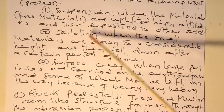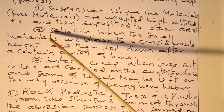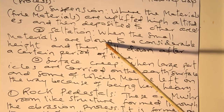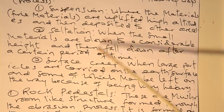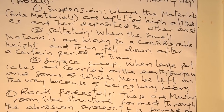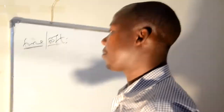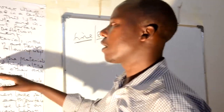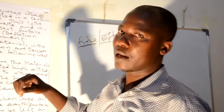How about saltation? Saltation is when small materials are blown to a considerable height and then fall down after a certain period of time. These are small materials which are blown to a certain height and fall down to a certain area over a certain period. The material which causes saltation is not the same as suspension, because suspension involves very fine, powder-like material.